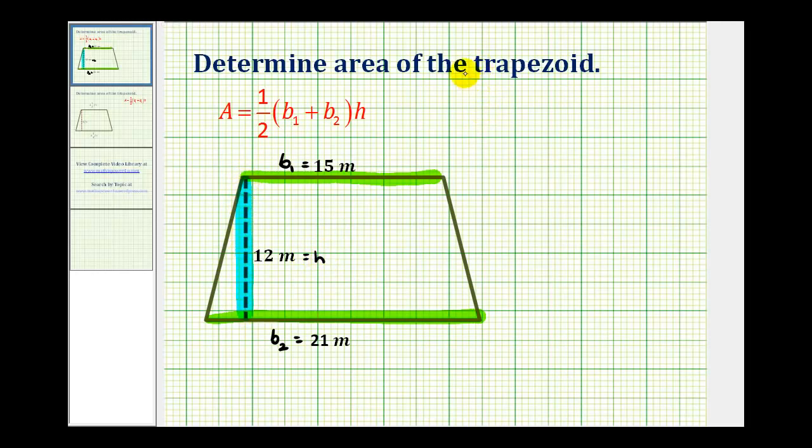The area of our trapezoid is going to be equal to one-half times the quantity 15 meters plus 21 meters times the height of 12 meters.